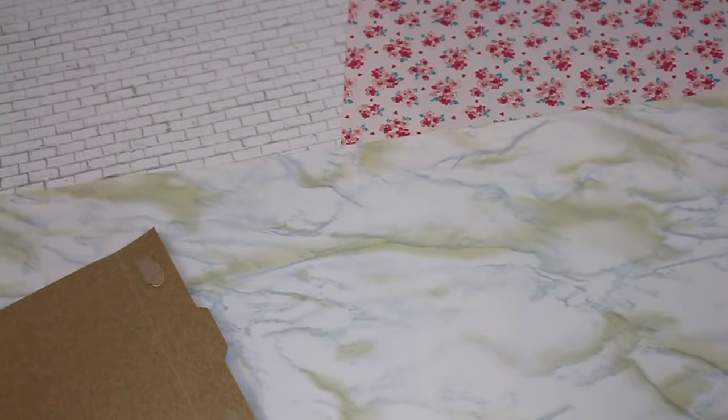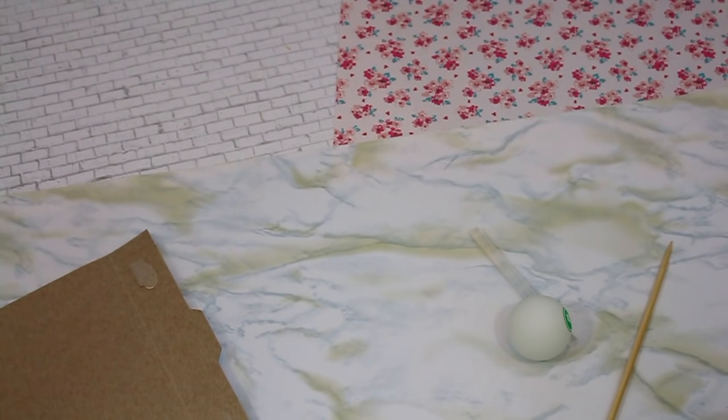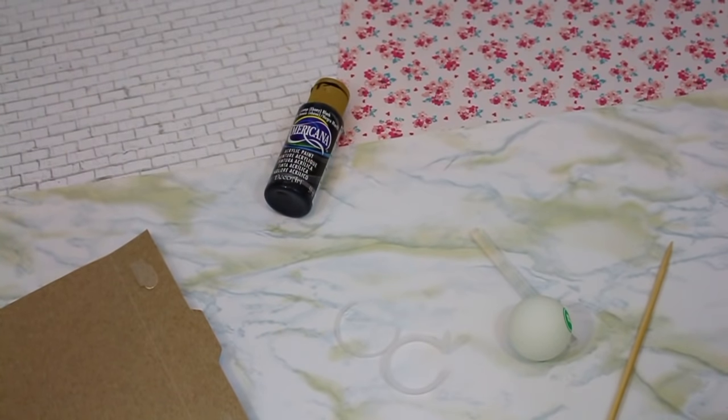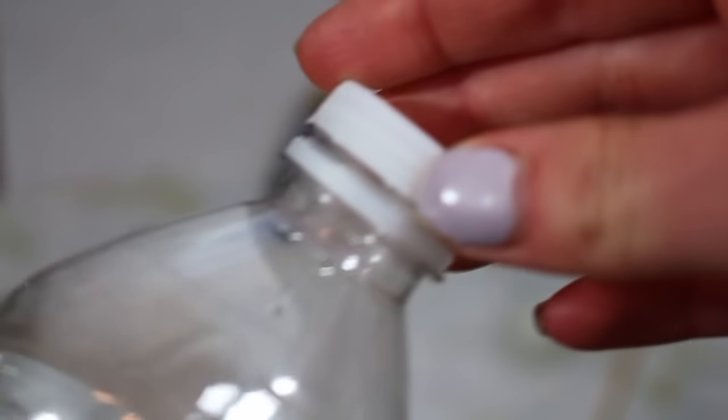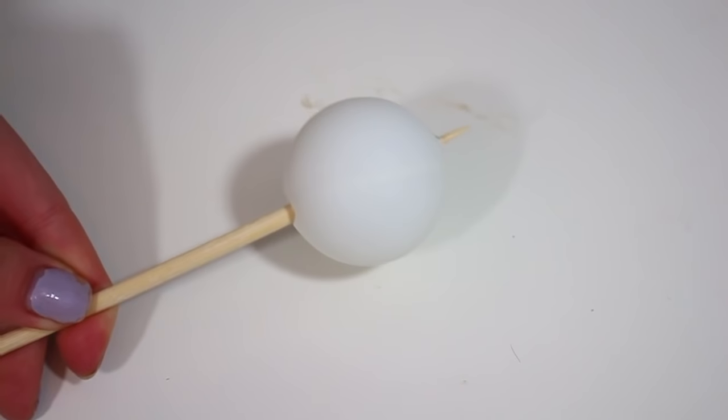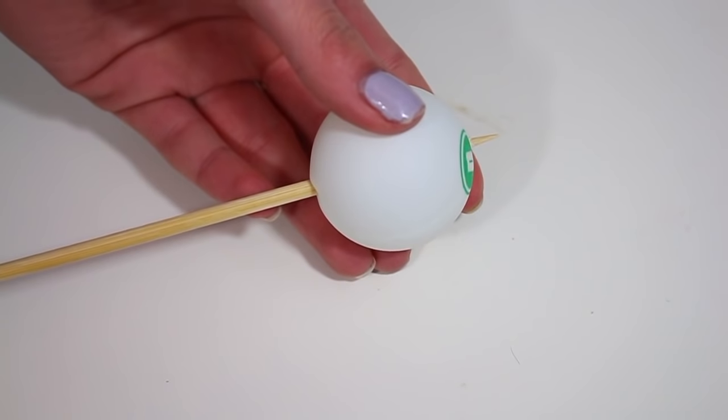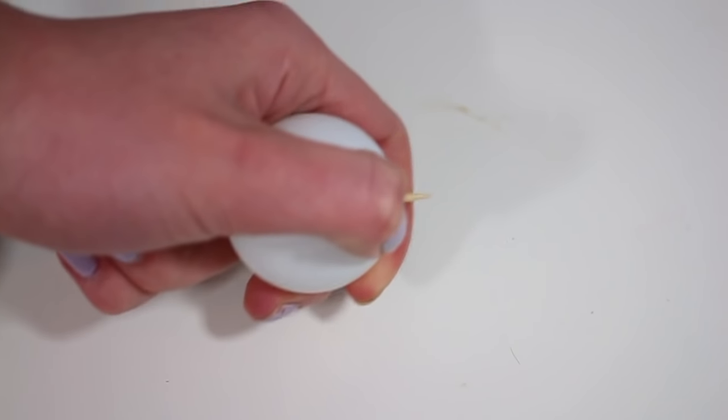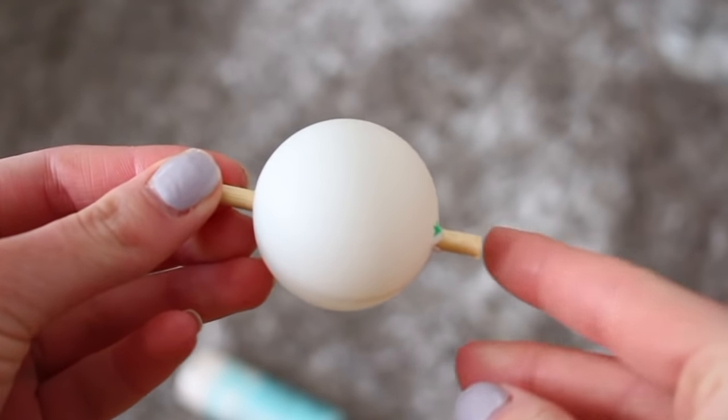For the globe, you're going to need some thin cardboard, a bamboo skewer, hot glue, a ping pong ball, or you can use any other like ball you have. I just had a ping pong ball though. You're also going to need some paint and the ring from a water bottle. Begin by taking your ping pong ball and just take your bamboo skewer and puncture it through the ball. So making sure that there's a little piece at the top and a little piece at the bottom.